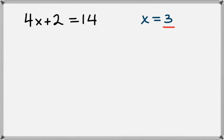So the first thing that we want to do is take 3 and plug it in for x. And so instead of x, we're going to have 4 times 3 plus 2 equals 14. And now we'll simplify and see if the two sides really are equal.